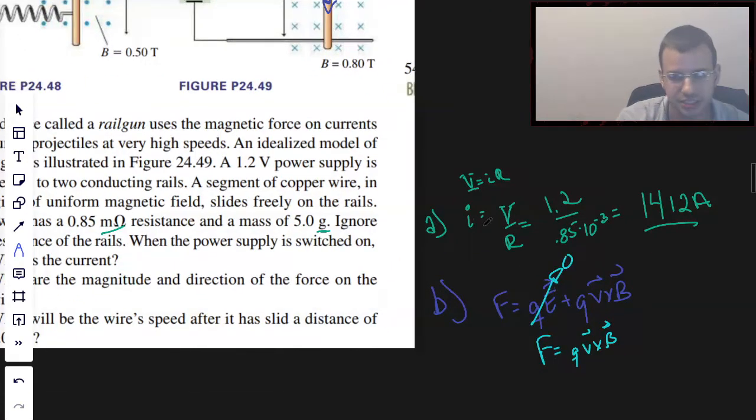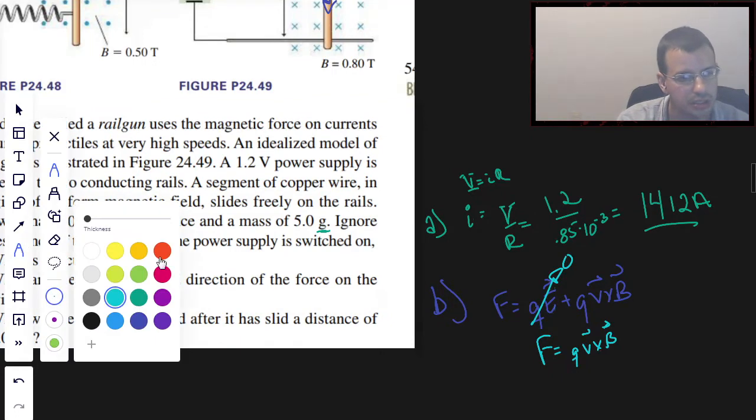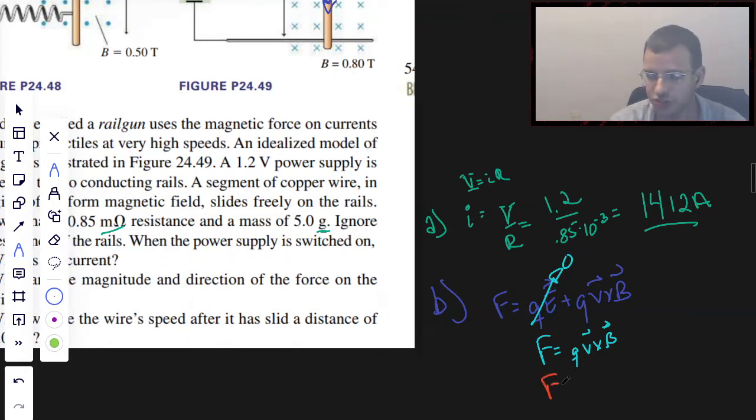Another way of writing this equation that you might be more familiar with is force equals IL cross B. They're exactly the same. It's just one is simplified. I like to use QV cross B when I'm thinking of particles moving, and IL cross B when you're thinking of current moving, i.e. a bunch of charged particles moving together. So both are fine.